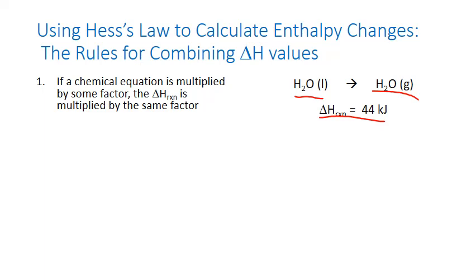Say that we needed to add together an equation that had two moles of liquid water going to two moles of gaseous water. This is the equivalent of multiplying the entire equation by two. We multiply the coefficients in front of each formula by two, and we also multiply the enthalpy by two. So to vaporize two moles of liquid water, it requires 88 kilojoules of heat.